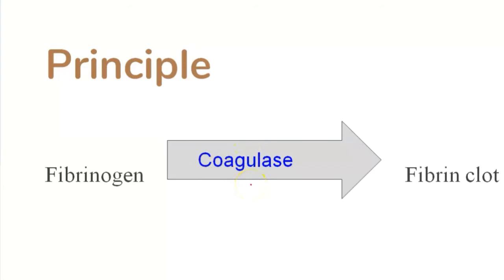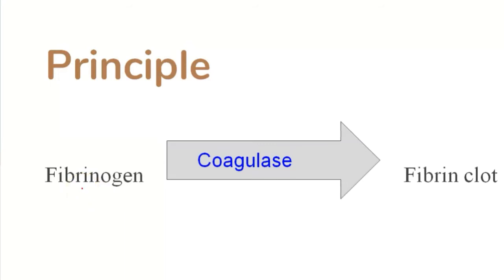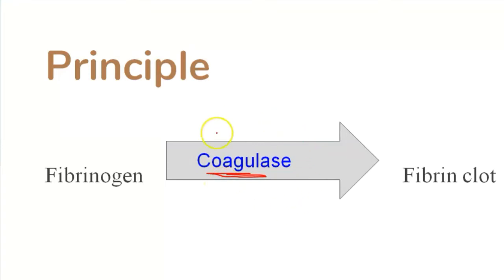The principle of the coagulase test: coagulase produced by staph aureus converts fibrinogen, present in plasma, into a fibrin clot. Plasma is used as the reagent in this test. A memory trick: the word 'coagulase' is related to 'coagulate,' which means clot, so you can remember that the end result you will see is a fibrin clot.